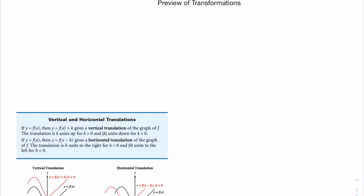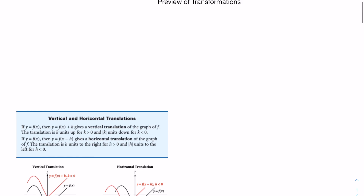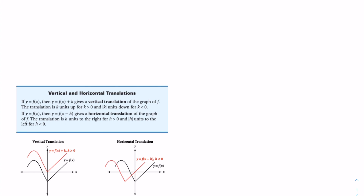The translation is k units up for k greater than zero, and the absolute value of k units down for k less than zero. If y equals f of x, then y equals f of x minus h gives a horizontal translation of the graph of f. This translation is h units to the right for h greater than zero, and the absolute value of h units to the left for h less than zero.